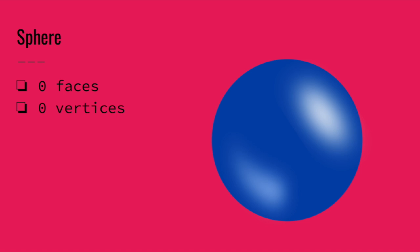The next shape we have is a sphere. This kind of looks like a ball, a basketball, a ping pong ball, a soccer ball. The funny thing about a sphere is that it's round so it doesn't have any flat faces and it has no corners so it has no vertices. So a sphere has zero faces and zero vertices.